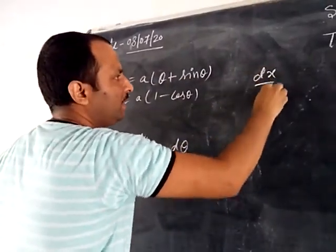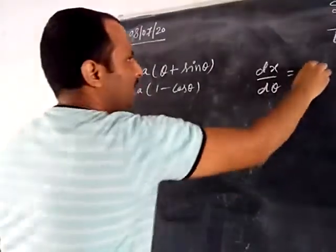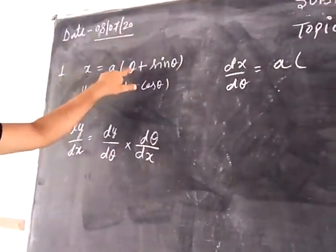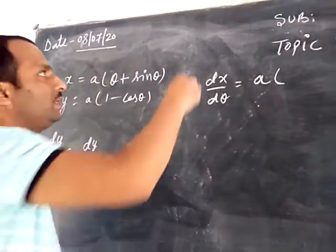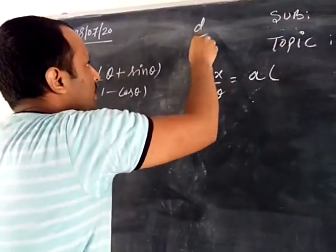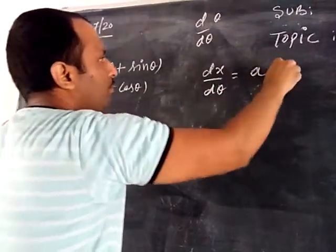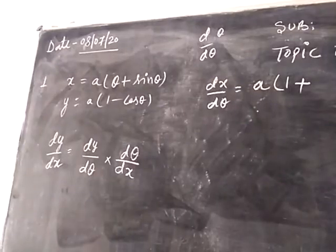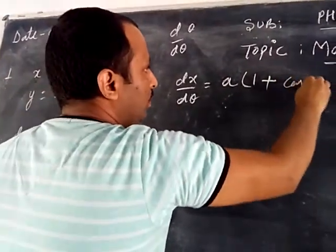Now x is dependent upon theta, so dx upon d theta: the constant a will come out, and the differentiation of theta gives 1, so one plus the differentiation of sin theta, which is cos theta.